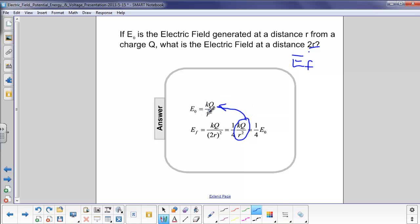That's exactly our initial electric field. So, I can put E0 back into the equation here, and I find that the final electric field is 1 quarter of the initial electric field.